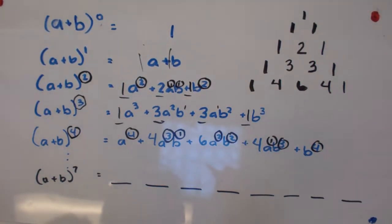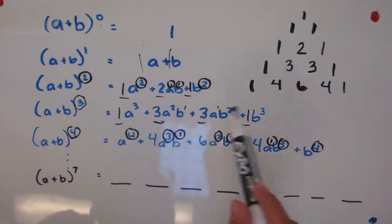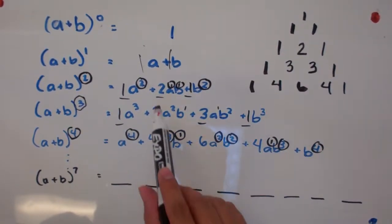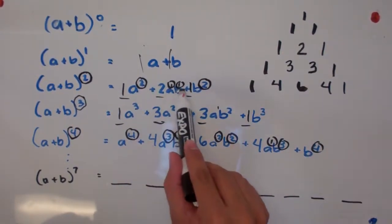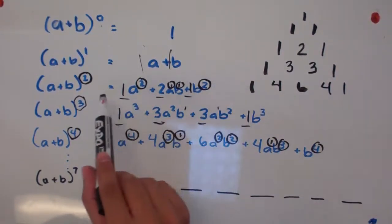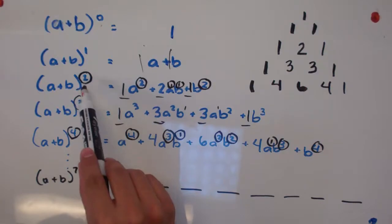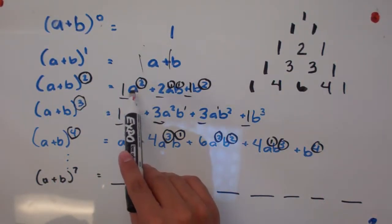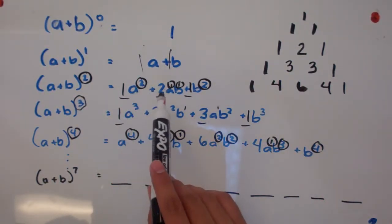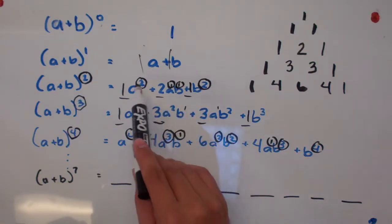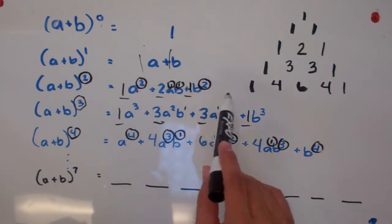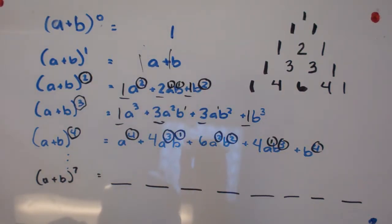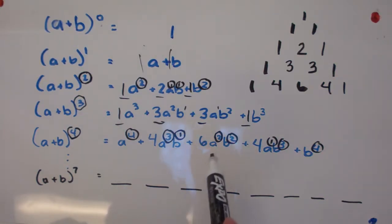So just to repeat: the coefficients come from Pascal's Triangle; the sum of the exponents equals what our power was; the a powers decrease — we had two, one, and zero; the b powers increase; and the number of terms is always one more than the exponent.